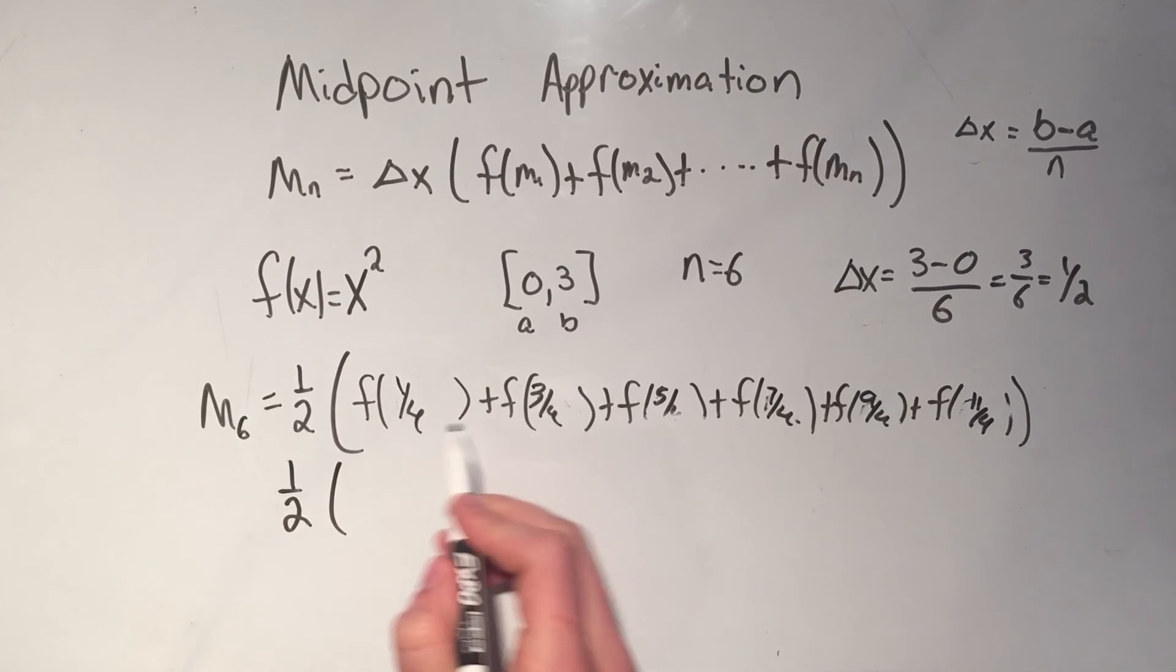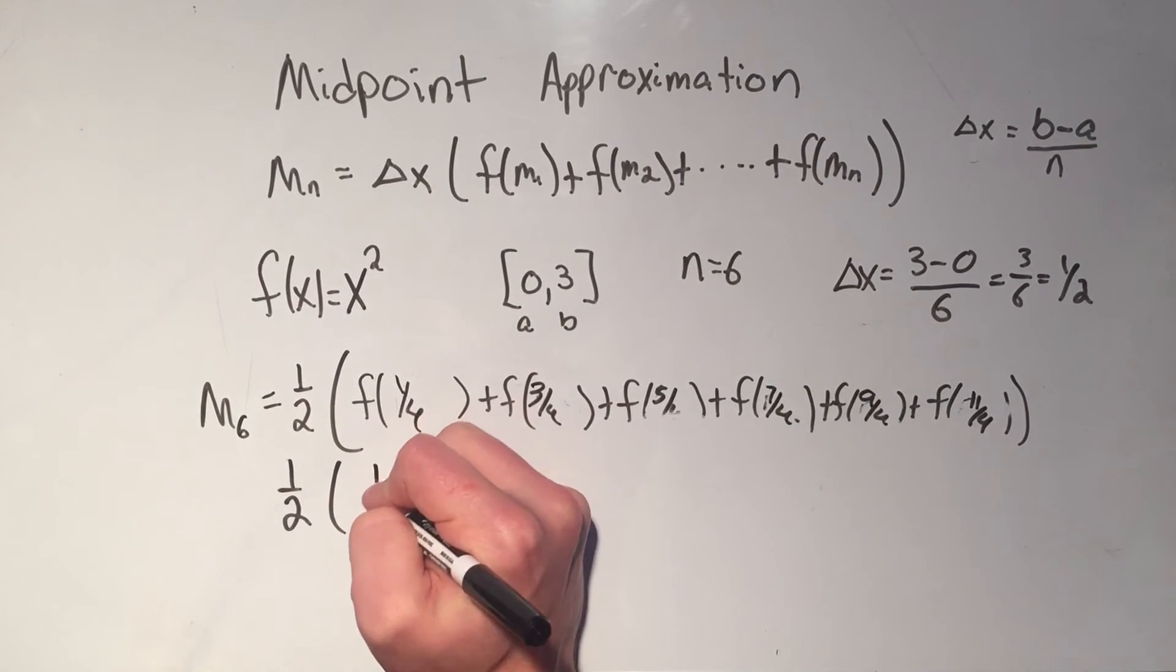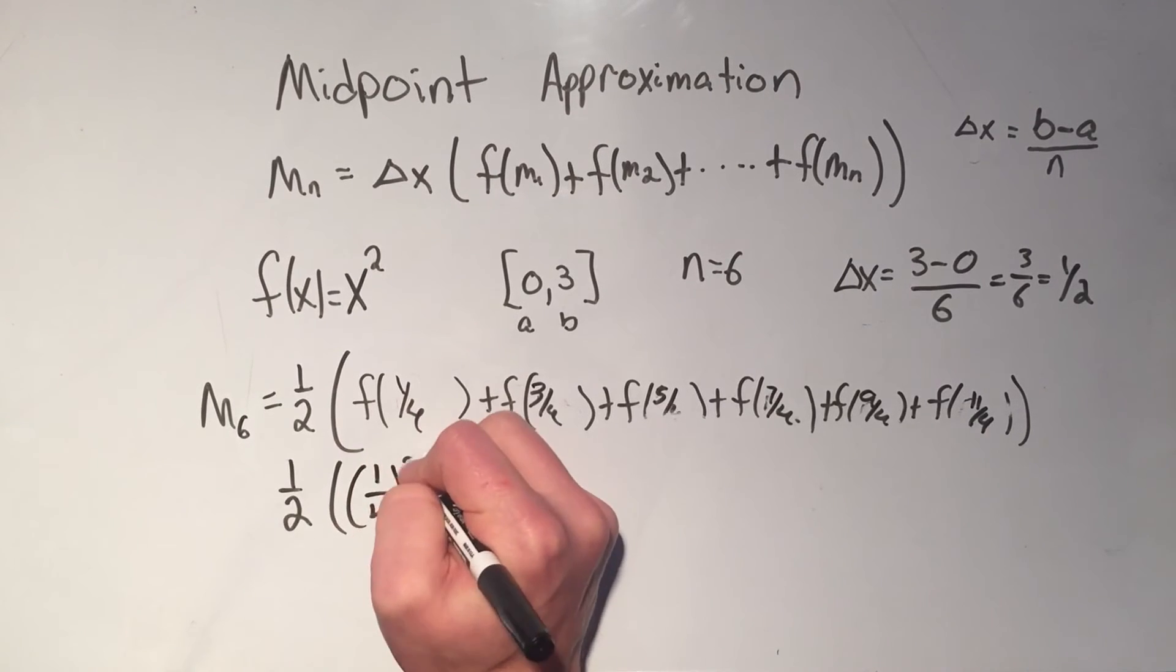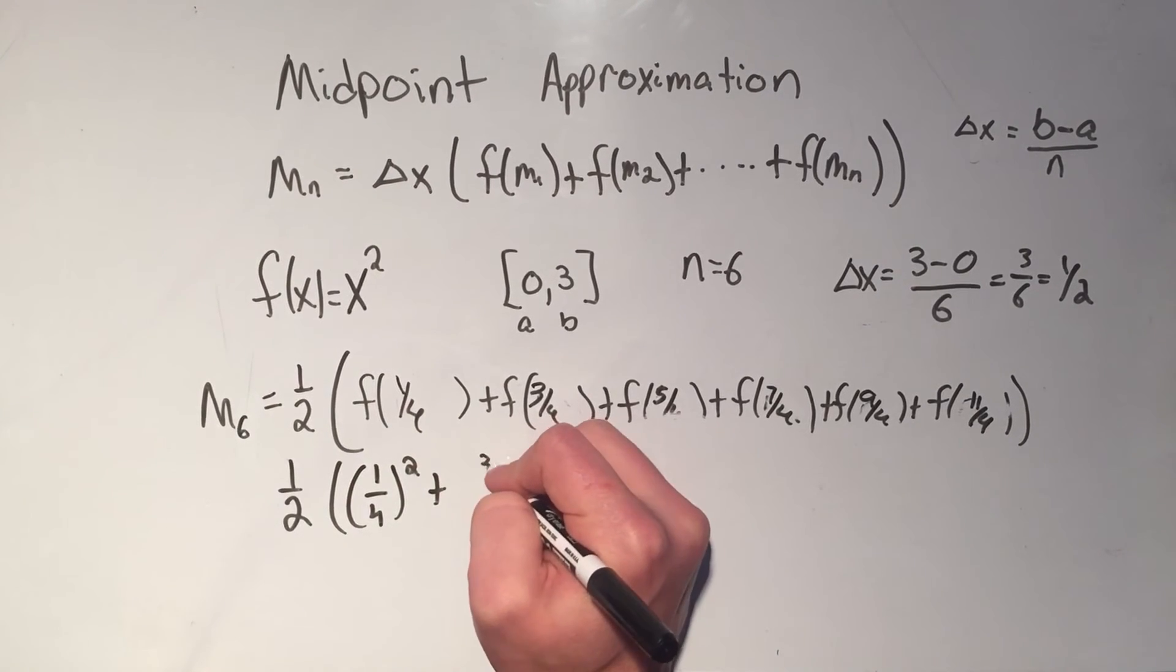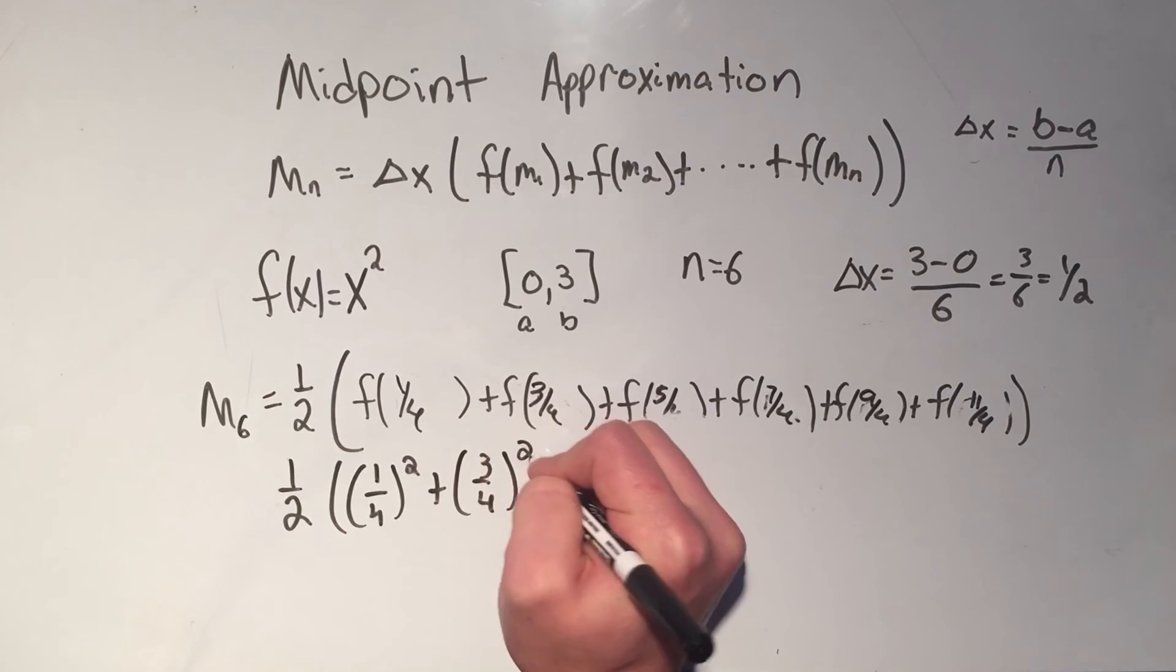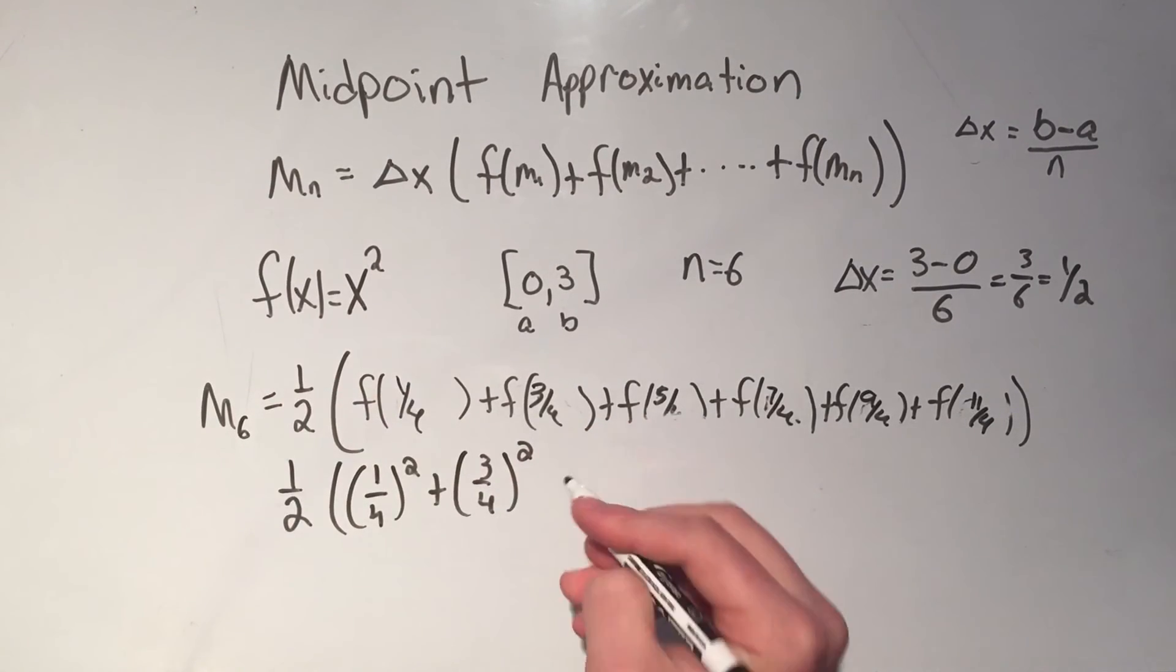Now all I have to do is I have to plug all these values into my function and add them all up. So this is 1 half times 1 fourths squared plus 3 fourths squared. And I'm squaring these because my function is x squared.